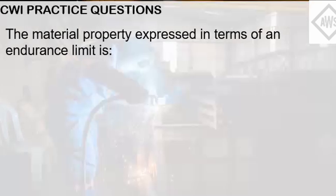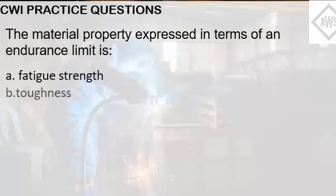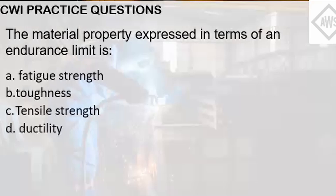The material property expressed in terms of an endurance limit is: Letter A, Fatigue Strength; Letter B, Toughness; Letter C, Tensile Strength; Letter D, Ductility; Letter E, Hardness.